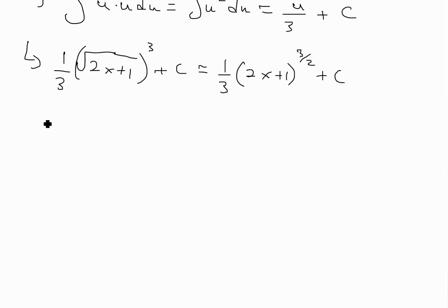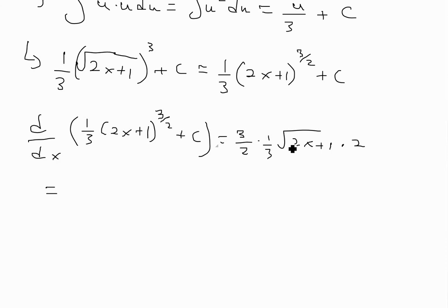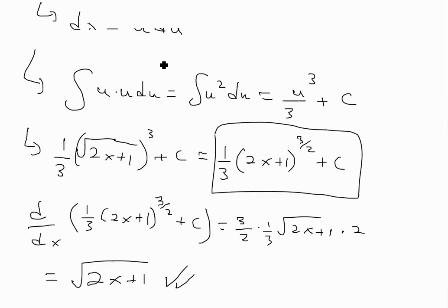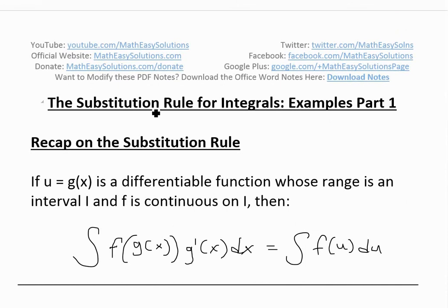You can double-check by taking the derivative. d over dx of one-third times 2x plus 1 to the 3 over 2: bring down 3 over 2, times one-third, subtract the power to get the square root of 2x plus 1, times the chain rule factor of 2. The 3's cancel and the 2's cancel, leaving just the square root of 2x plus 1 — confirming our answer. I'll box the final answer. That's all for today. You can download these exact notes in the link below — thanks for watching, and stay tuned for another Math Easy Solution.